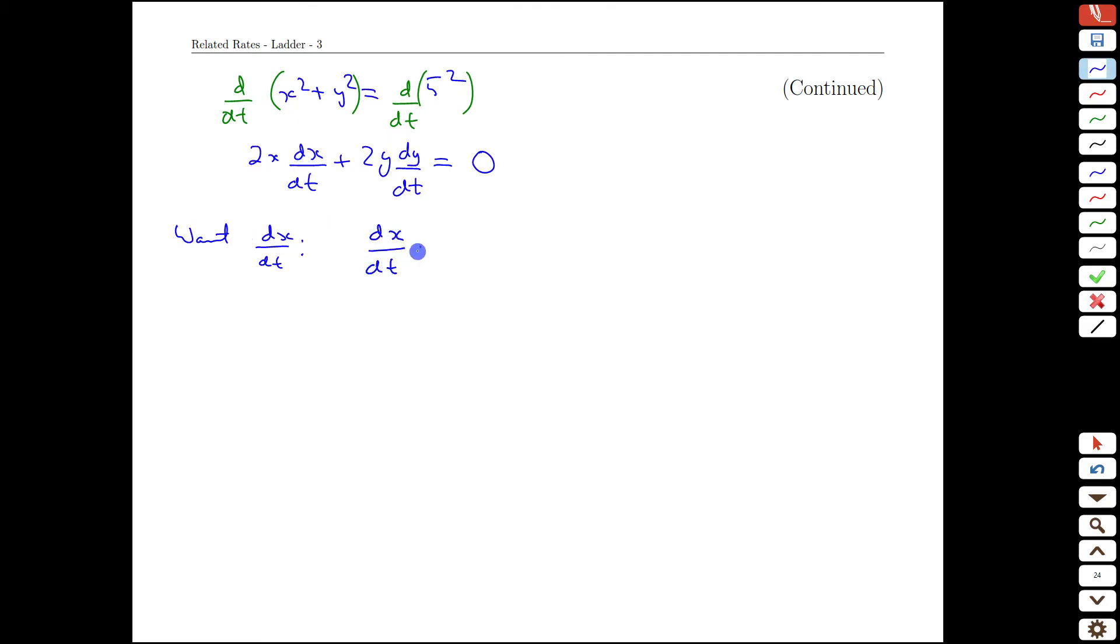So we solve for that. dx/dt is going to be this brought over negative 2y dy/dt, careful with our notation, now we still have the 2x. Bring the 2x over, negative 2y over 2x dy/dt, and the 2's cancel. That's our general relationship between the rate at which the tip of the ladder is moving, I'll call it a velocity here because it might have different signs, and this is the bottom of the ladder velocity.